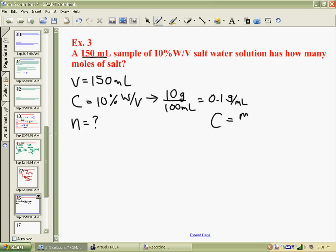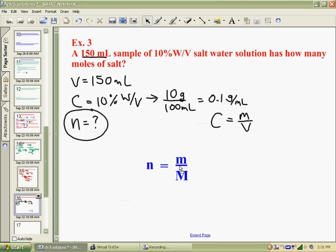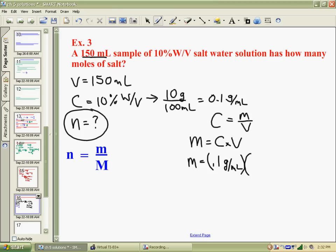This question wants moles. So we can't just use m over v and get an answer. You have to get mass, and then we need to look at our formula for n is equal to mass over molar mass. So we'll have to use this afterwards and rearrange him to get our question done. So, we'll first solve for mass. m equals c times v. Mass is equal to the concentration, which is 0.1 grams per mil. Should make this pretty easy to do. Volume of 150 mils. Milliliters cancel, and gives us a mass of 15 grams.